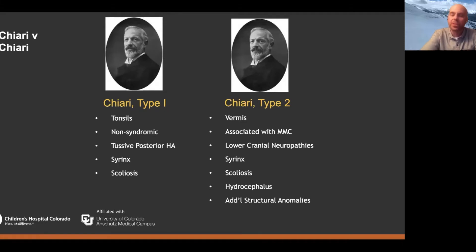In both conditions you can have syringomyelia and scoliosis. In fact, that's incredibly common in kids with myelomeningocele. But kids with myelomeningocele much more often have hydrocephalus, which you have to think about in the context of managing their Chiari.